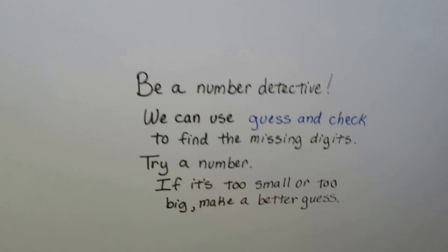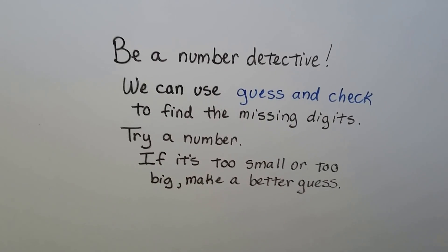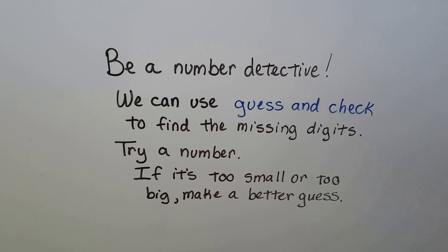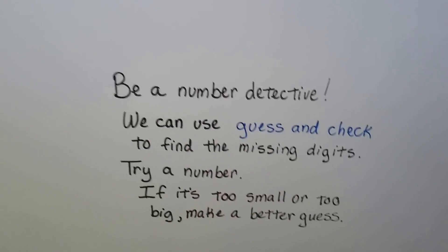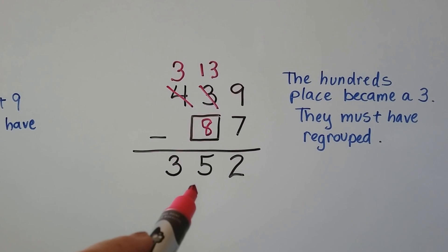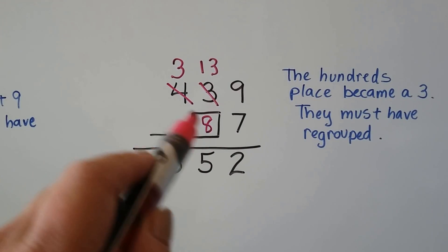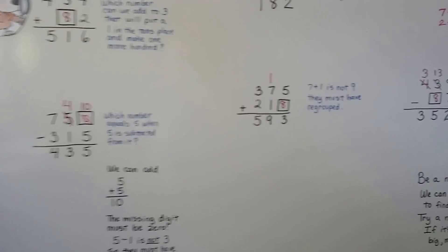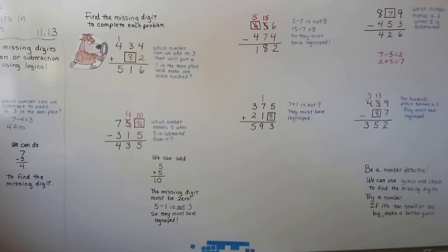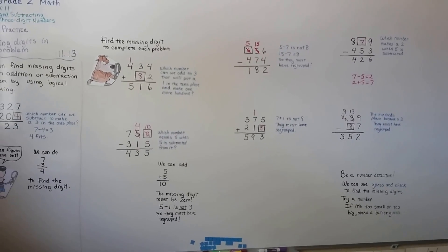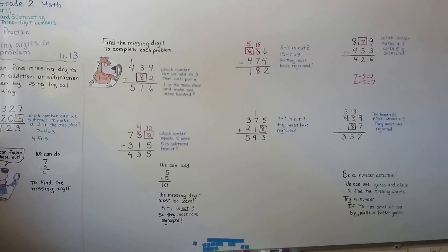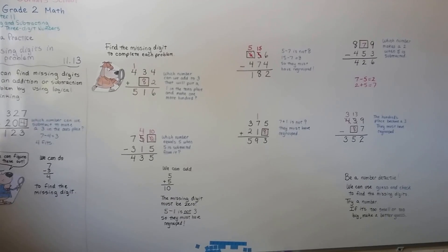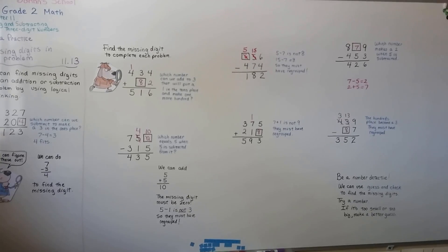So be a number detective. And we can use guess and check to find the missing digits. Try a number. Any number that you think it might be. And if it's too small or too big and it doesn't make the right answer and it doesn't fit, make a better guess. We could have done this and put a 6 in there and seen if it worked. And if it didn't work, we could have tried a 7 and then an 8. So you can use guess and check if you want. It's better for your brain if you try to figure it out. You'll get better at math because you'll be practicing. But if you want to use guess and check and some scratch paper, that's fine if that helps you find the answer. All right. We're going to talk about estimating in the next video. And I hope you'll be there for me. Don't forget to hit the like button. Bye.